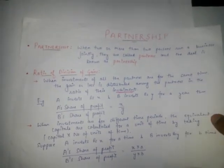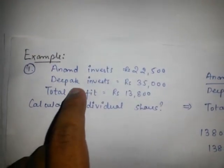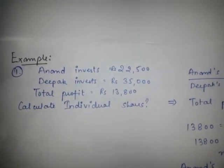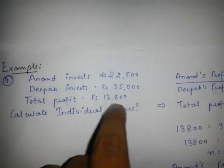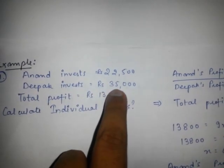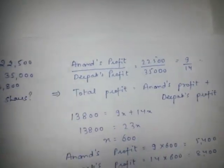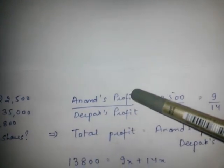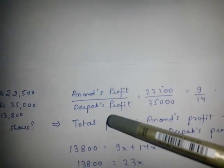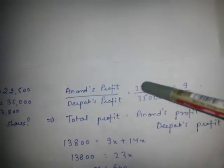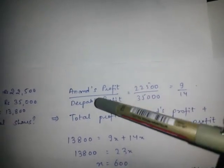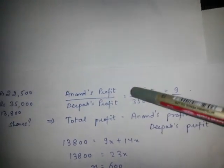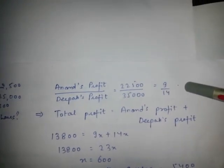Let's come to a numerical example. We have two candidates, Anand and Deepak, both investing their money. Anand's investment is 22,500 and Deepak's investment is 35,000. Applying our first rule, the ratio of Anand's profit to Deepak's profit equals the ratio of their investments, which gives us 9 divided by 14.